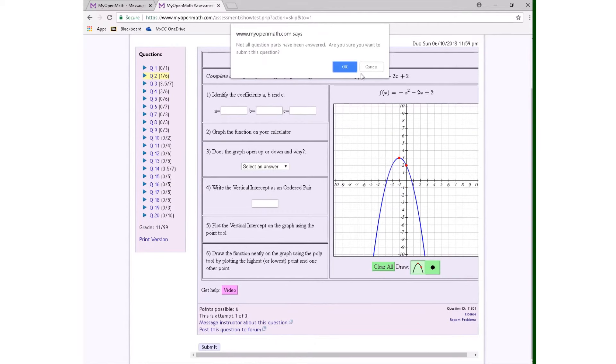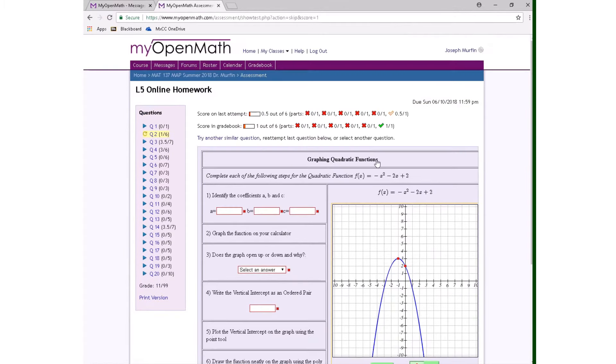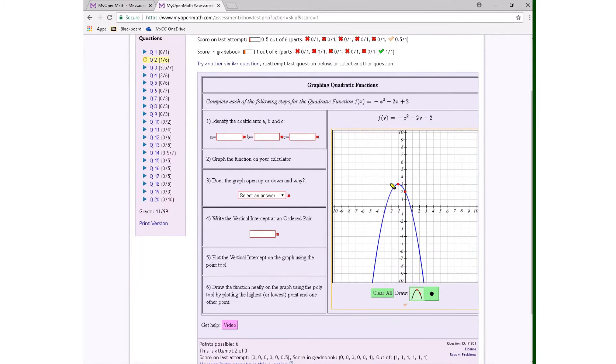However, if I go to submit this, I'm going to get the yellow box, which means it's not 100% correct. The thing that it's missing is this part right here: plot the vertical intercept on the graph using the point tool. So even if you've plotted it using the poly tool, you have to go back and plot it using the point tool like that, and you'll see this kind of point pop up.